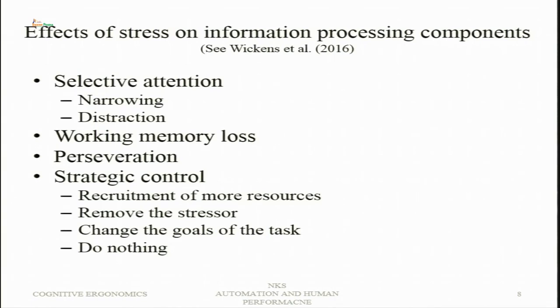Then there is distraction — irrelevant stimuli in the environment attract our attention, so the selective attention that should focus on the relevant task becomes distracted. Then there is working memory loss. Working memory has a limitation of 7 plus or minus 2 items. Working memory limitation may involve difficulties in processing, in transferring information to long-term memory, or in acquiring and handling relevant information properly.